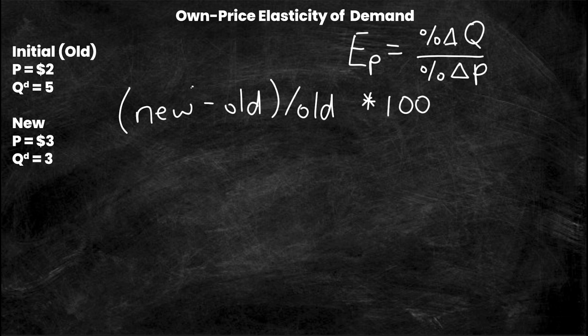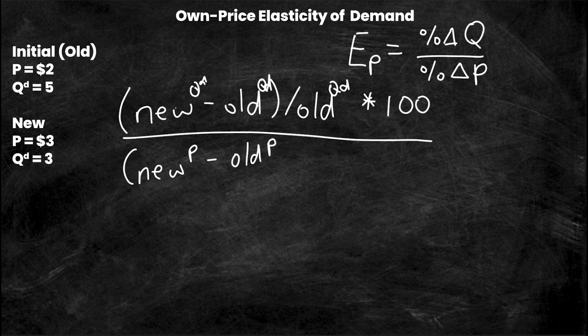So what we're going to have here is new QD minus the old QD over the old QD times 100. And then on the denominator we're going to have the new P minus the old P all over the old P times 100. Now the first thing you're going to notice is that these times 100s are going to cancel out, so I'm actually going to cancel them out.